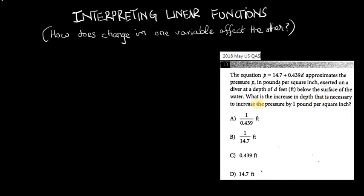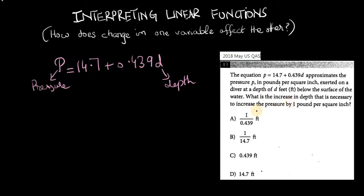What is the increase in depth that is necessary to increase the pressure by one pound per square inch? What they're saying is essentially you have a linear equation p equals 14.7 plus 0.439d, where p is the pressure and d is the depth. In other words, what is the increase in depth necessary to increase the pressure by one pound per square inch?